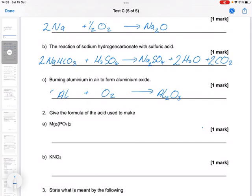So I need 2 aluminiums and 1 and a half oxygens. Or I could have 4 aluminiums, 3 oxygens, and 2 aluminium oxides.